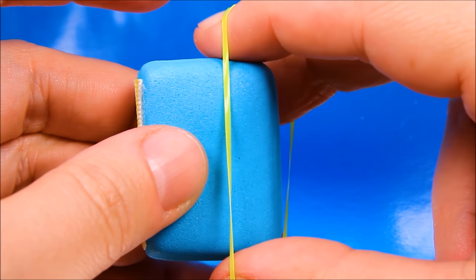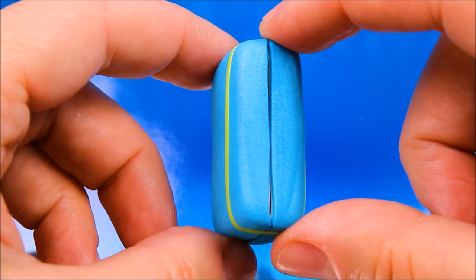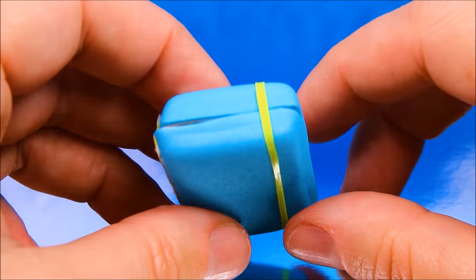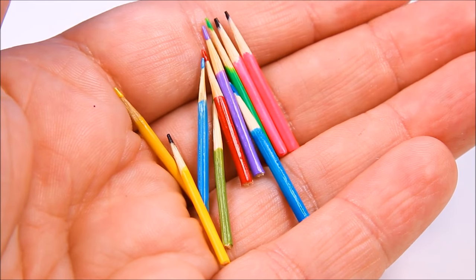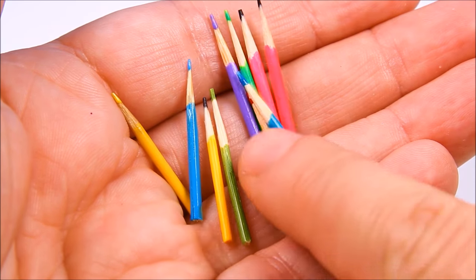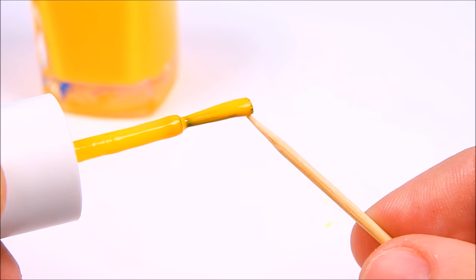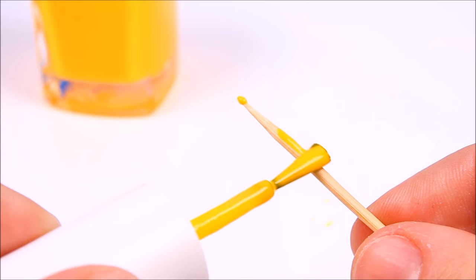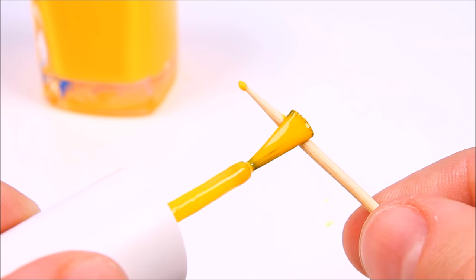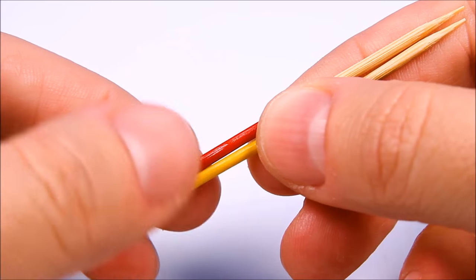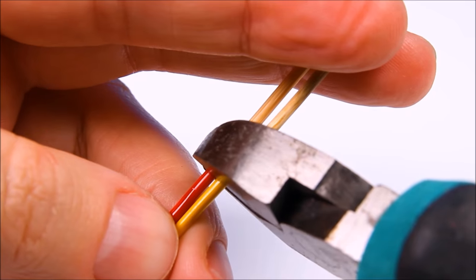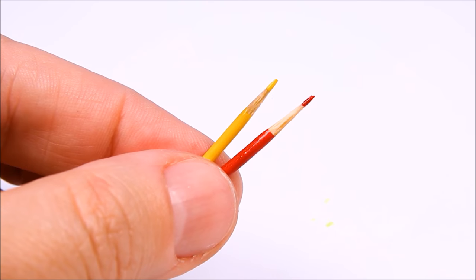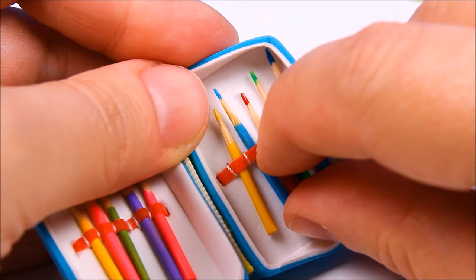I used another rainbow loom to close the pencil case. To make these standard colored pencils I used a toothpick and nail polish. And the pencil case is ready.